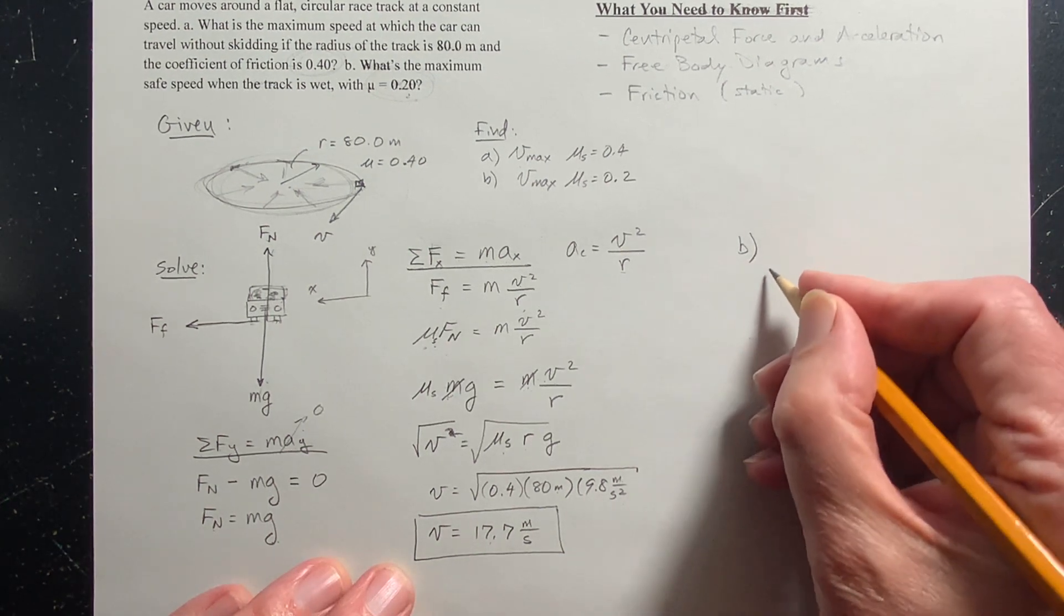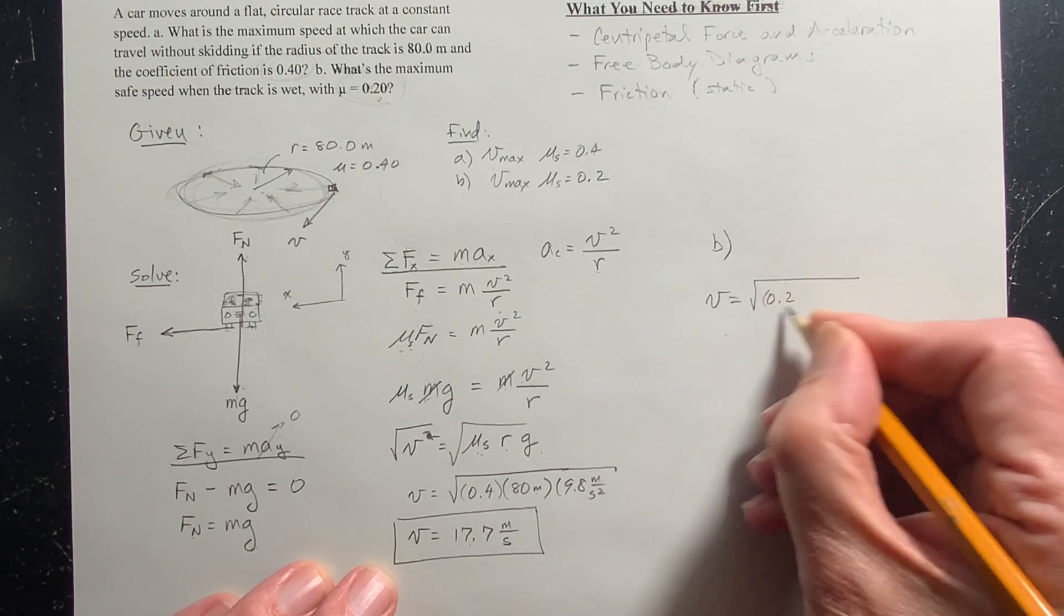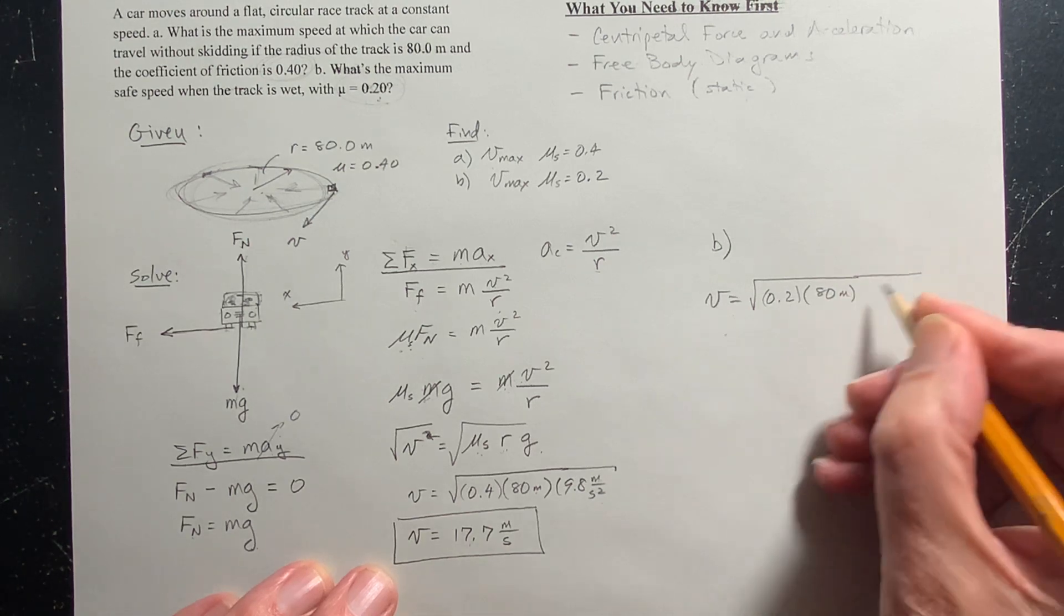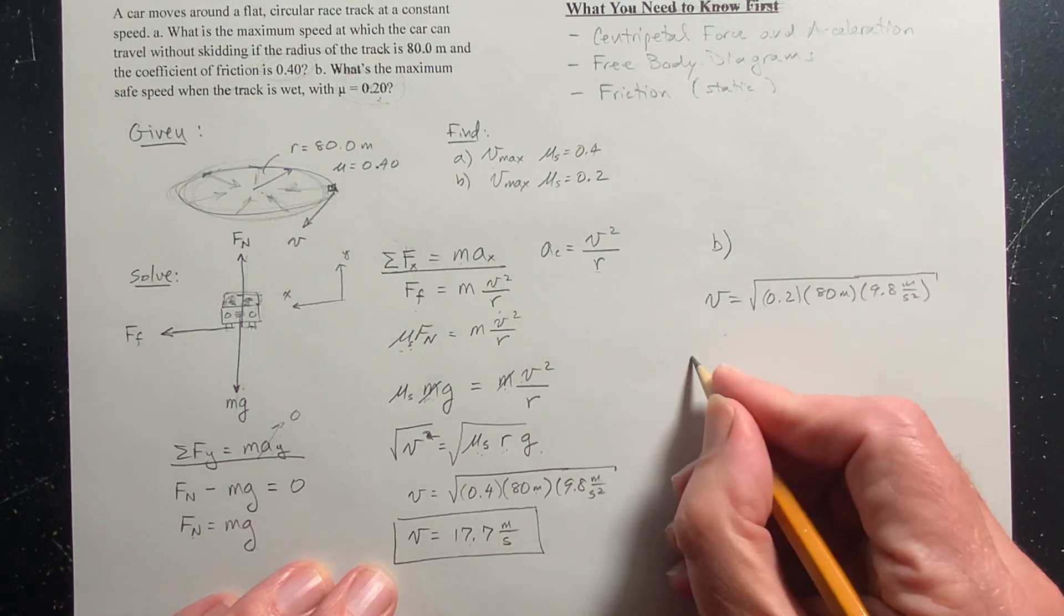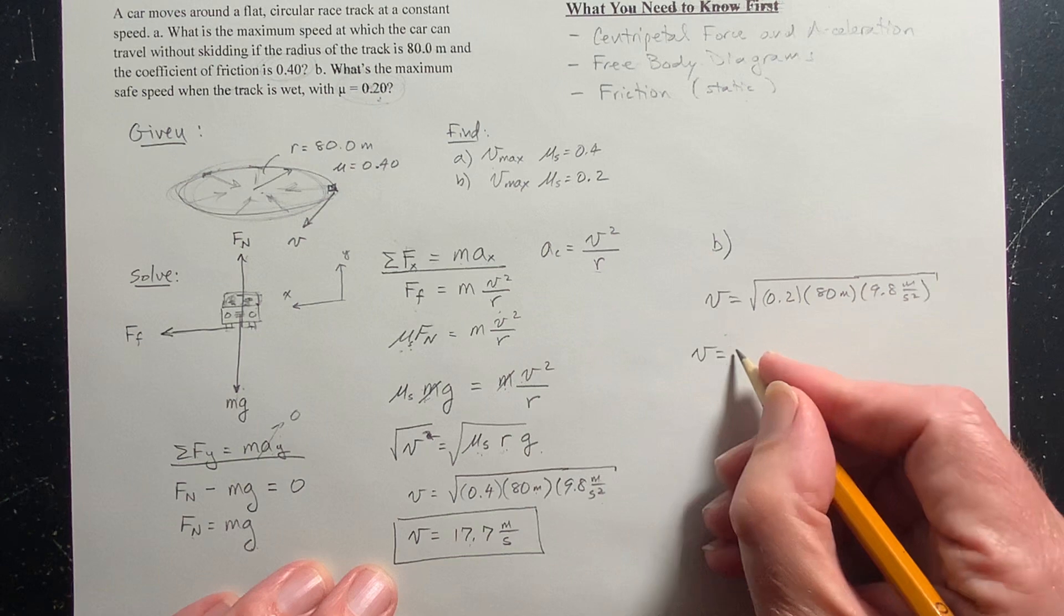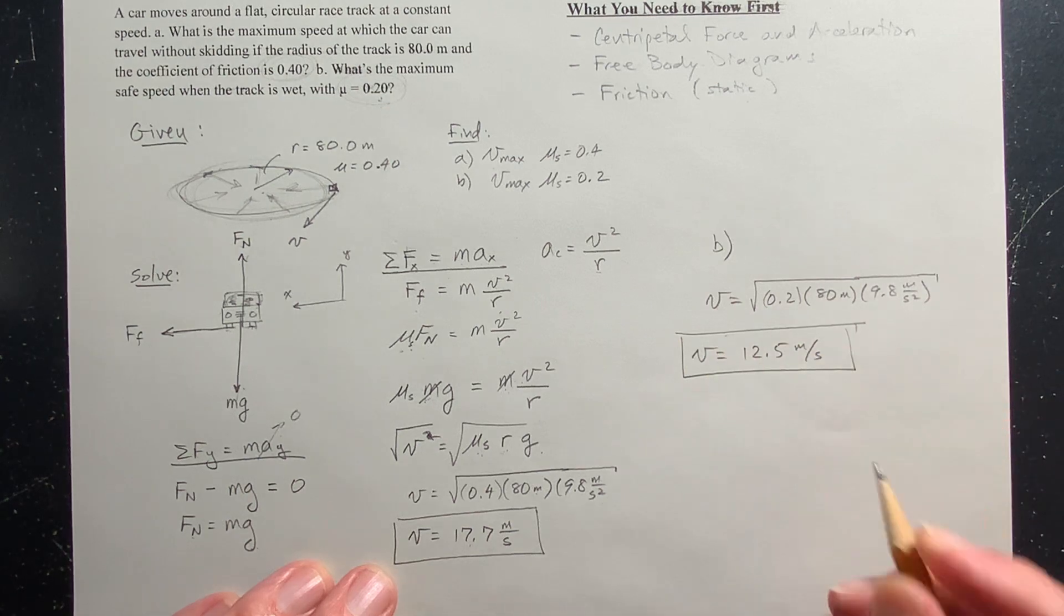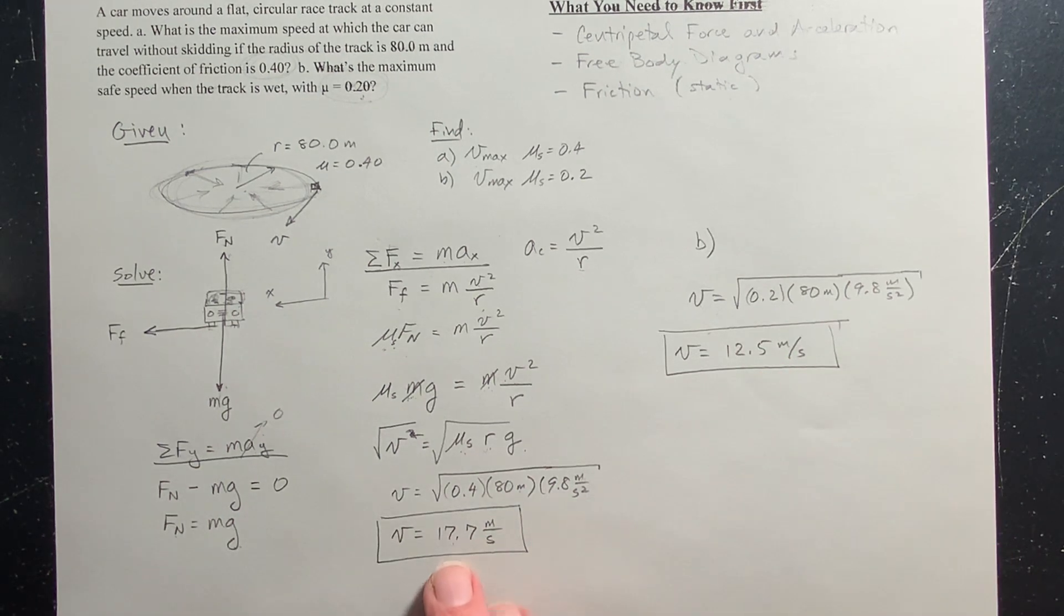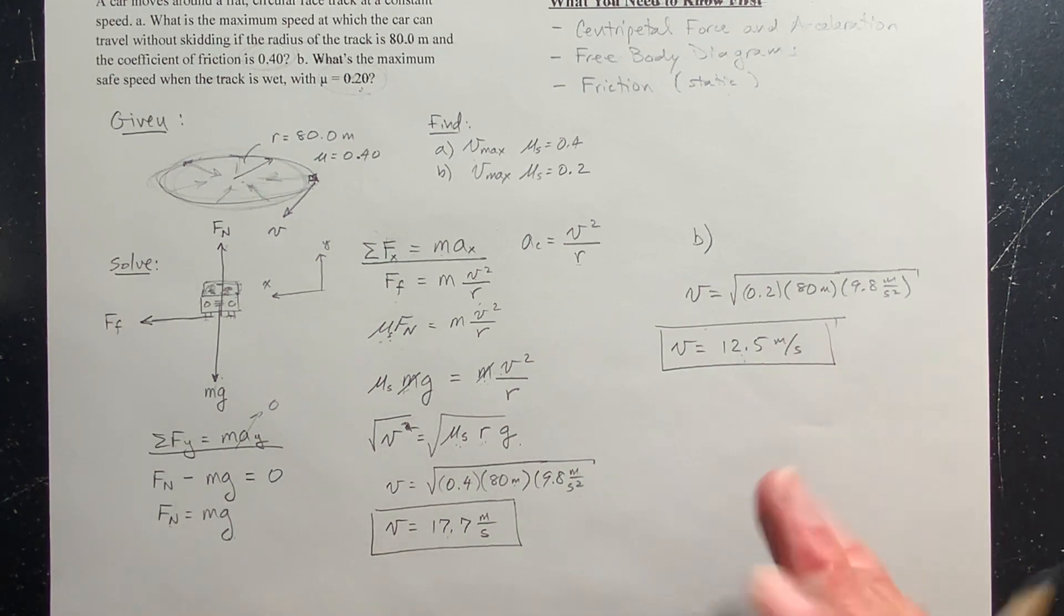Let's just do the calculation and see. V equals the square root of mu rg. So that's 0.2 times r times g. And so when you do that, plug that in your calculator and you get 12.5 meters per second. So this is my answer for part b. And so notice that it's not half, but hey, do this right now, take this number and divide it by the square root of two and you'll get this kind of interesting.